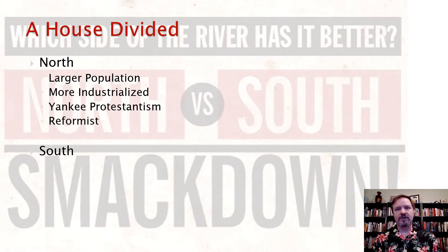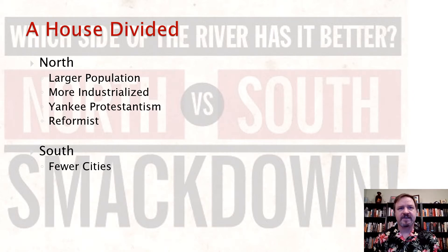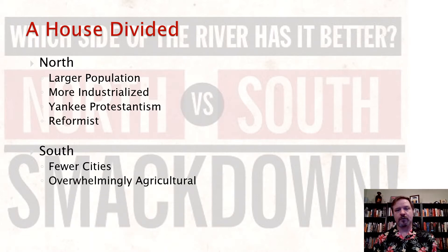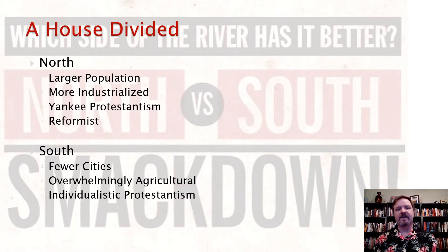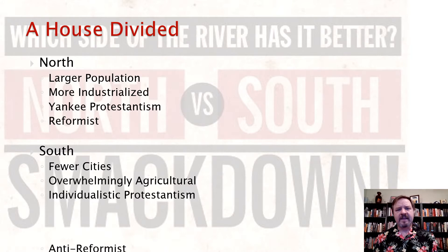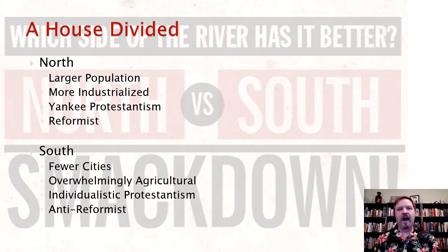As for the South, it had fewer cities. Its largest city was New Orleans, which had a population of about 160,000. It was overwhelmingly agricultural — about 90% of the population was involved in farming in some way or form, whereas in the North it was maybe about 40 to 50%. It's individualistically Protestant — salvation of self, not salvation of the community — and therefore kind of anti-reformist. And when the South looked at the North, they saw it as cold, money-hungry, and godless.